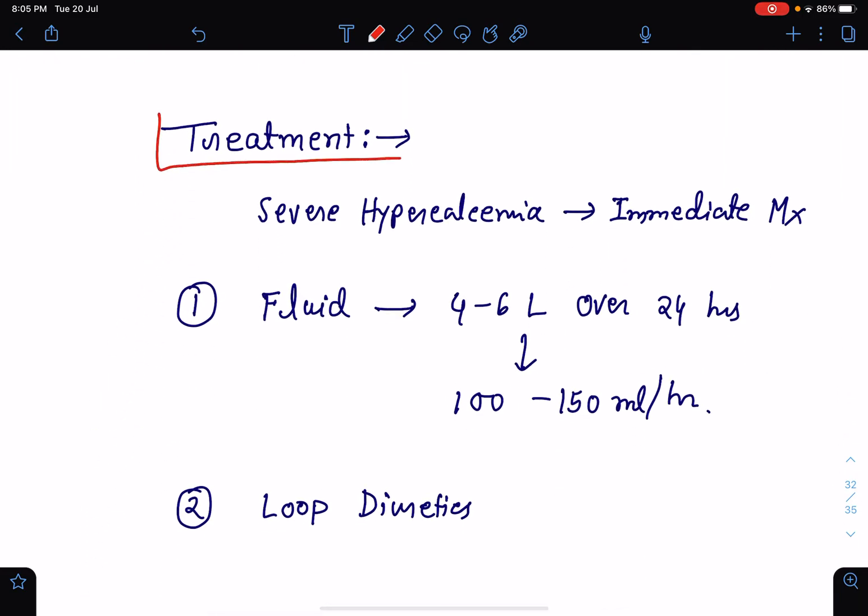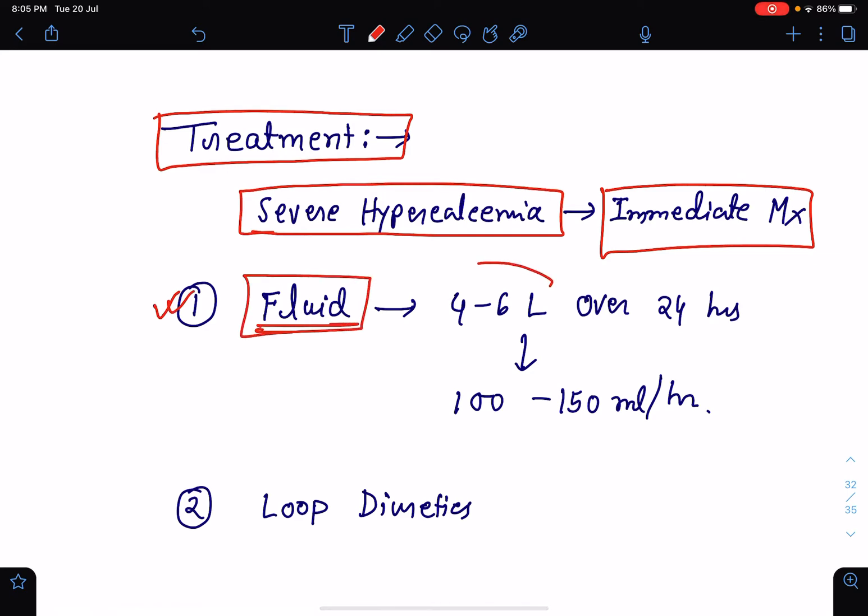If we talk about the treatment, mild cases do not require any immediate treatment. But if it is a case of severe hypercalcemia presenting with severe symptoms, then immediate management is very much necessary. First of all, we need to administer fluid. Almost 4 to 6 liter of fluid to be administered over 24 hours which should be followed by administration of maintenance fluid that is 100 to 150 ml per hour. Because if there is hypovolemia, it will result in decreased excretion of calcium, thereby resulting in increase in hypercalcemia. Fluid administration is very much necessary.